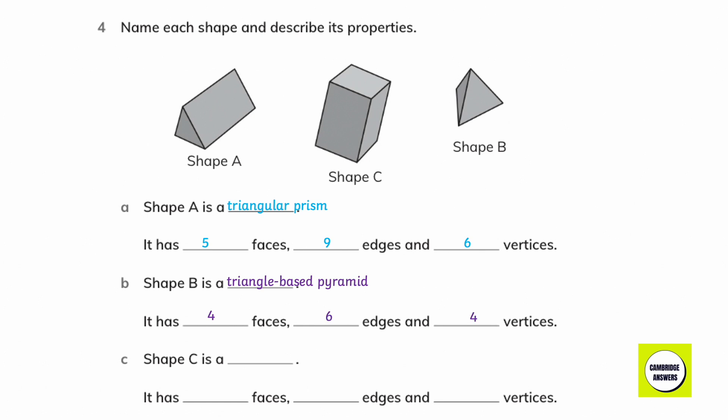Shape C is a cuboid. It has 6 faces, 12 edges, and 8 vertices.